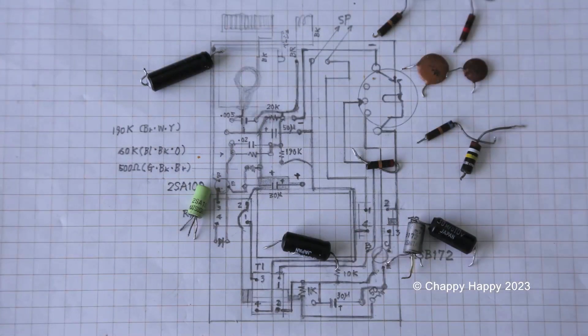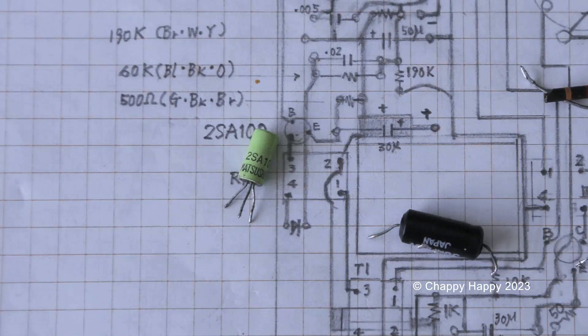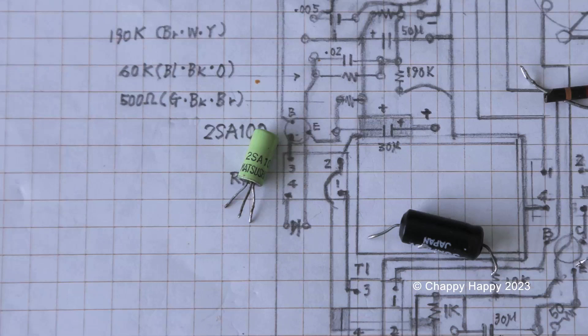I checked every part and found this transistor, 2SA100 is bad. However, I don't have the germanium PNP transistors to replace.